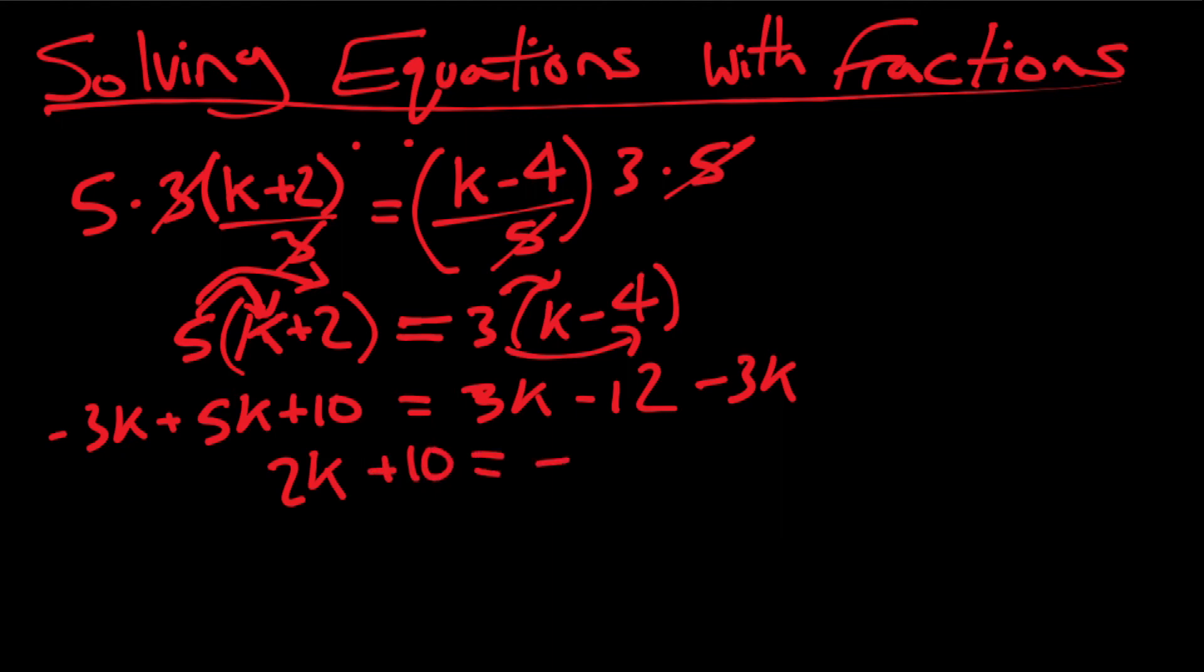I'm gonna subtract three k from this side as well, and that will give me two k plus 10 equals negative 12. But now I can do two k equals negative 12 minus 10. To get rid of that, now I'm at two k equals negative 22.